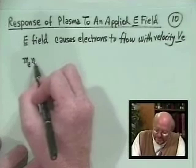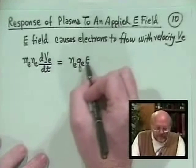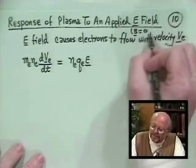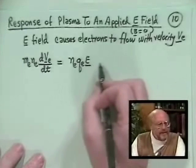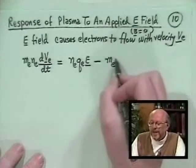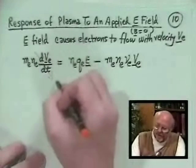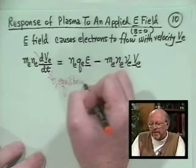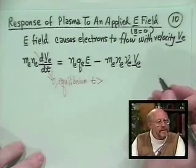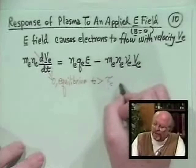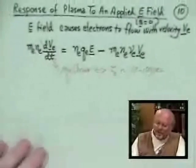If we go back to our momentum balance equation, we have M_E N_E dV_E/dt equal to the Lorentz force N_E Q_E E. We'll put B equals 0 for simplicity, so there's no V cross B Lorentz force and no pressure gradient. But there is the Coulomb collisional relaxation term: M_E N_E nu_E times the electron flow velocity. For equilibrium, we don't worry about transients — any time long compared to the electron collision time, which is about 10 to 100 microseconds in typical laboratory plasmas.